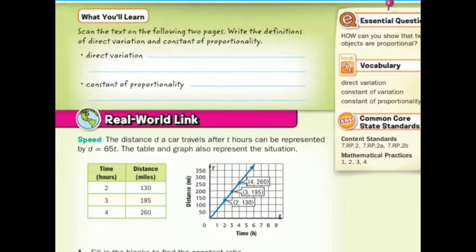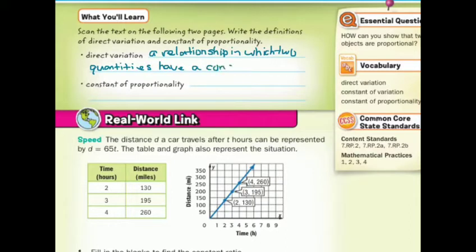If we were to write the definitions of direct variation and constant of proportionality, direct variation is a relationship in which two quantities have a constant ratio. As for constant proportionality, this is the constant ratio in a direct variation.